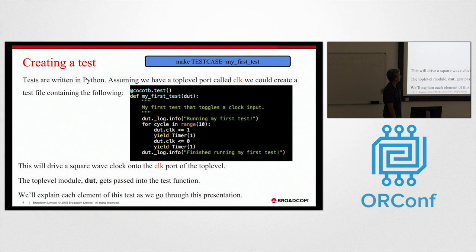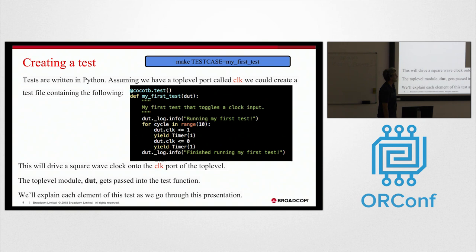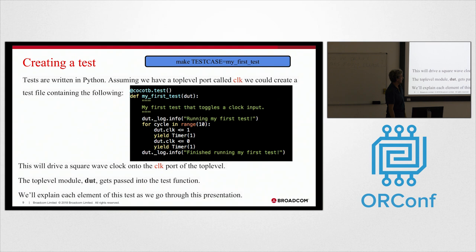So this is Hello World, a Hello World example in CocoTB. If you're not super familiar with Python, this might seem a bit overwhelming at the start. Most of my audience I've given this to have been RTL designers who might have played with Python, but not a lot. So I'm going to cover all the things here in this example. But you can kind of tell here that this is going to toggle the clock up and down ten times. You can see this function here, my first test, the argument - this is one important part. The first argument here in a CocoTB test is the top level instance in the simulation.